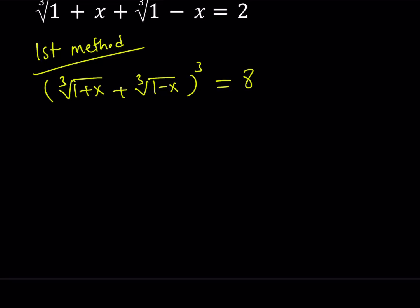This can be written as a³ + 3a²b + 3ab² + b³. But we can also write it differently: a³ + b³ + 3ab times the quantity a plus b. This is the formula I'm going to use.